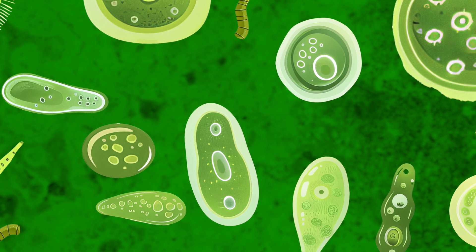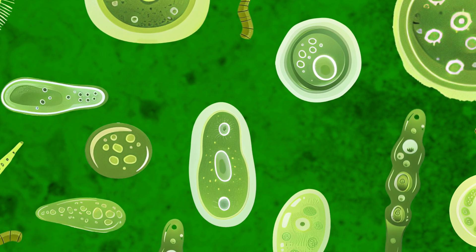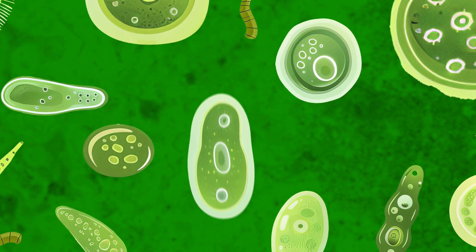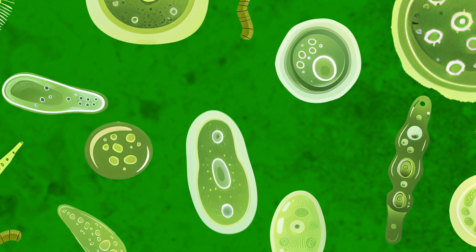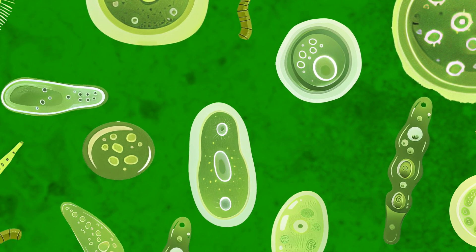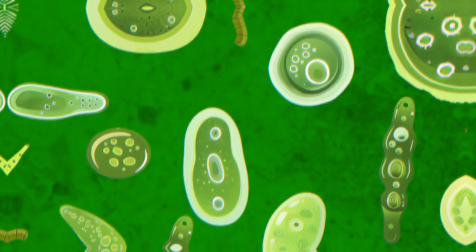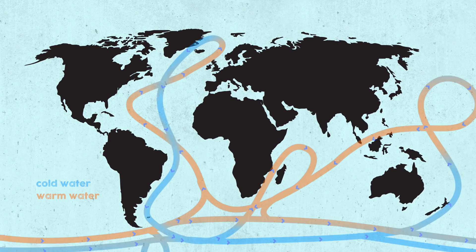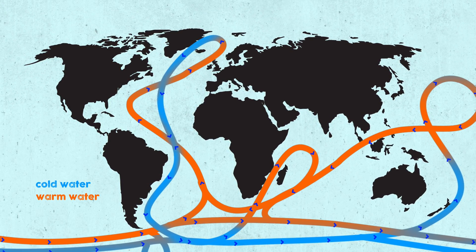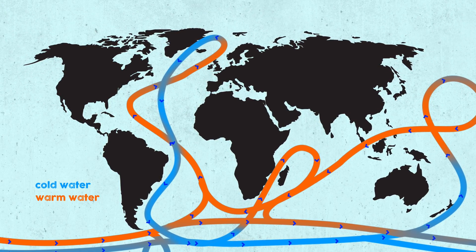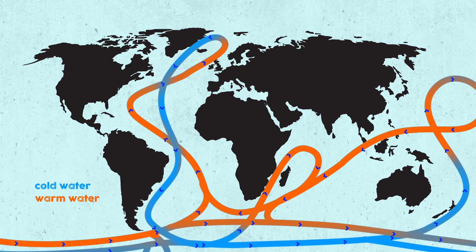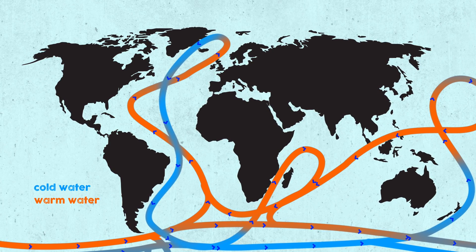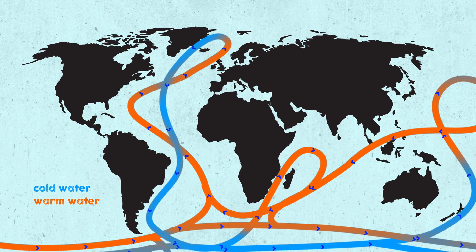Number two: through the production of oxygen by single-celled organisms in the ocean called phytoplankton. Number three: by deep ocean circulation, carrying oxygen-rich waters from the poles and circulating them between our ocean basins.